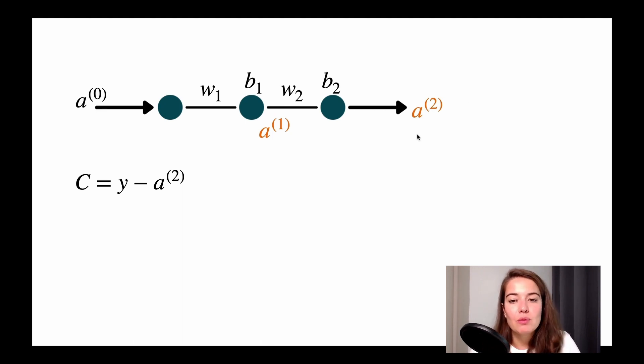So what did we do? To know how I can, how I should update the weight 2, I need to understand how weight 2 affects the cost or the error. So what I do for that is I have a cost function. The cost function is my actual value, the output that I'm trying to predict, and what I predicted.